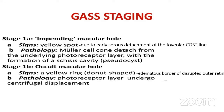Moving to the staging of macular hole: Gass staging. There are two staging classifications — the clinical classification by Gass and the OCT-based classification by the International Vitreo-Macular Traction Study Group. In the clinical classification there are four stages. Stage 1a (impending hole): a yellow spot is seen on clinical examination, due to early detachment of the foveolar cone outer segment line. In pathophysiology, there is Müller cell detachment from the underlying photoreceptor layer with formation of a pseudocyst.